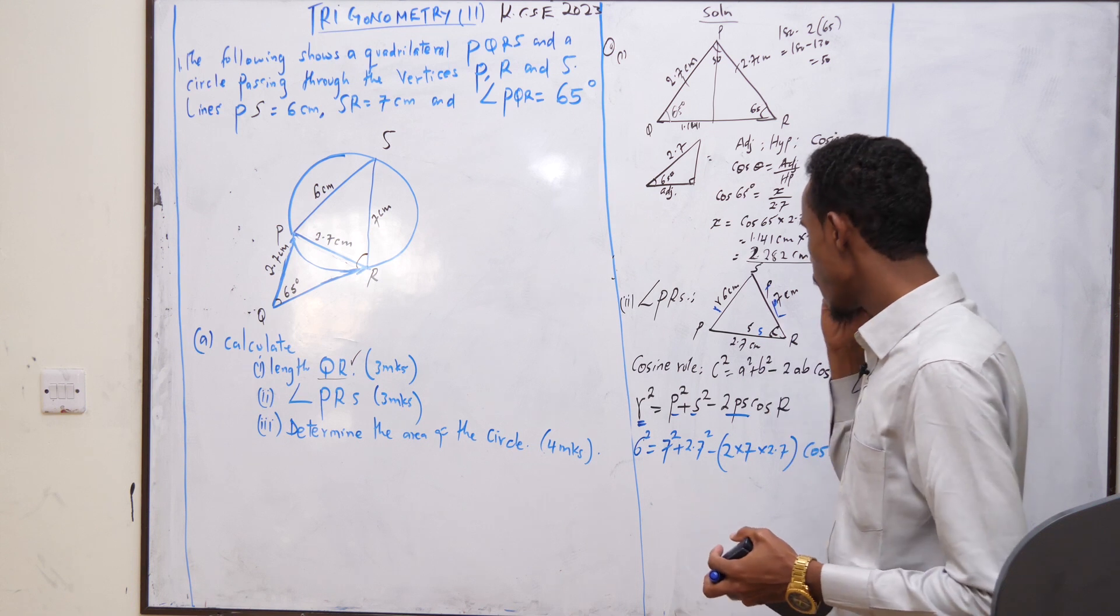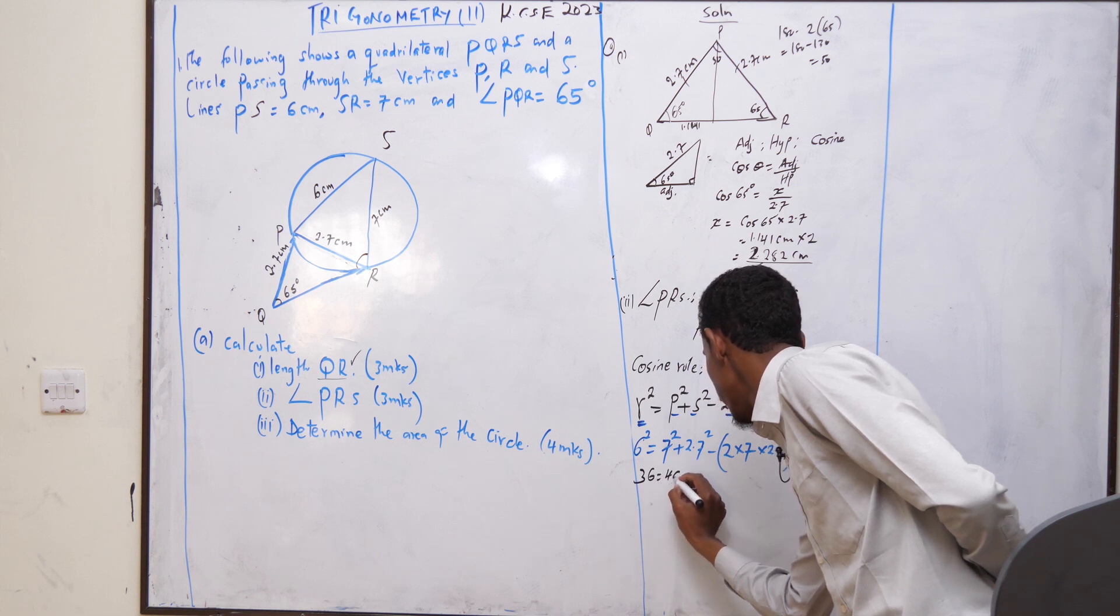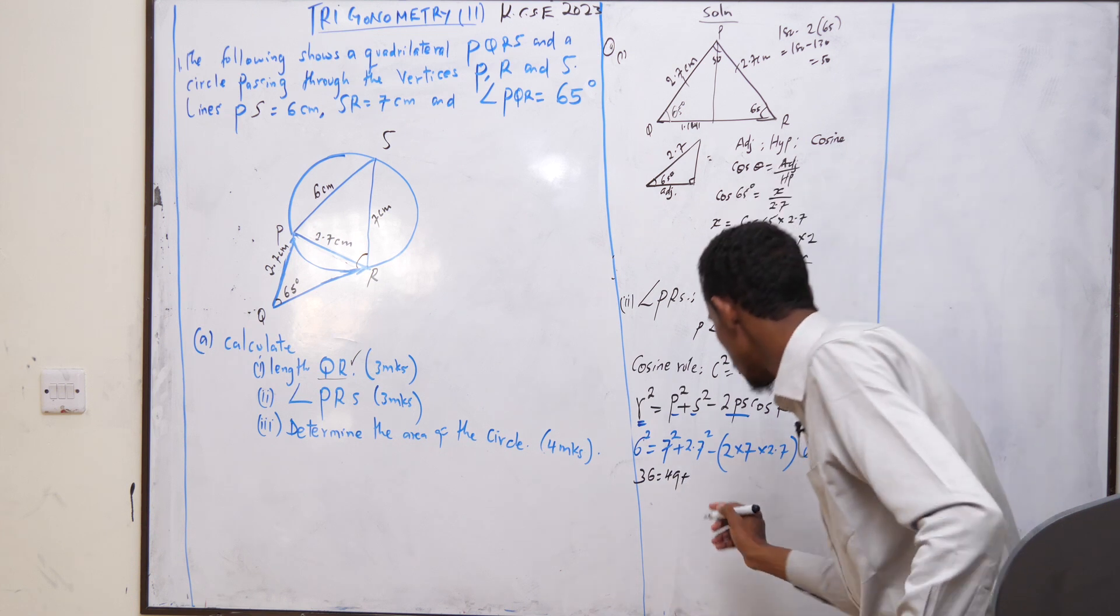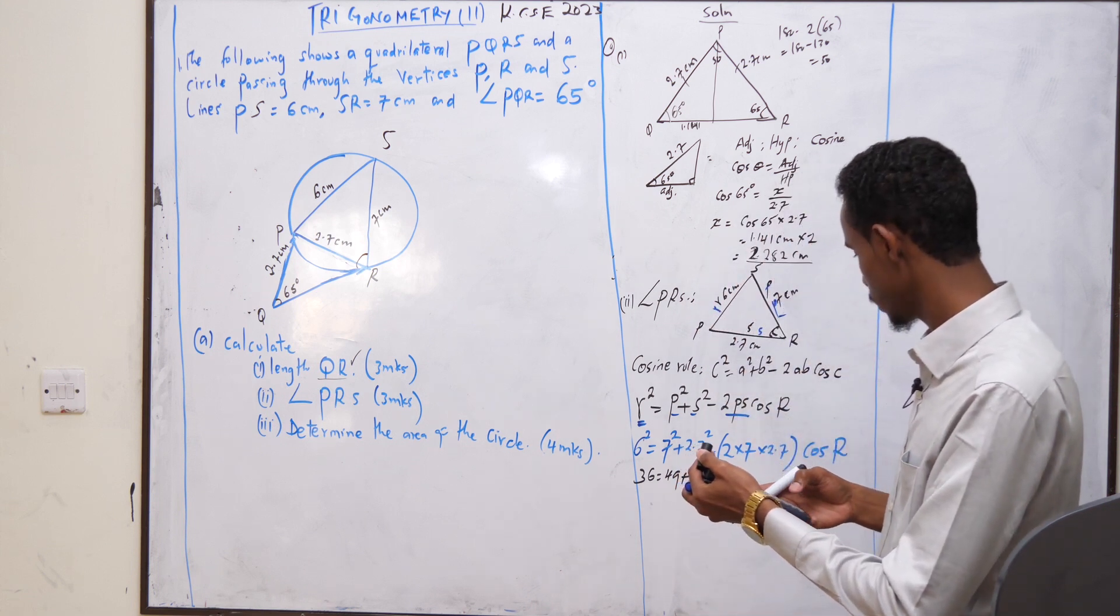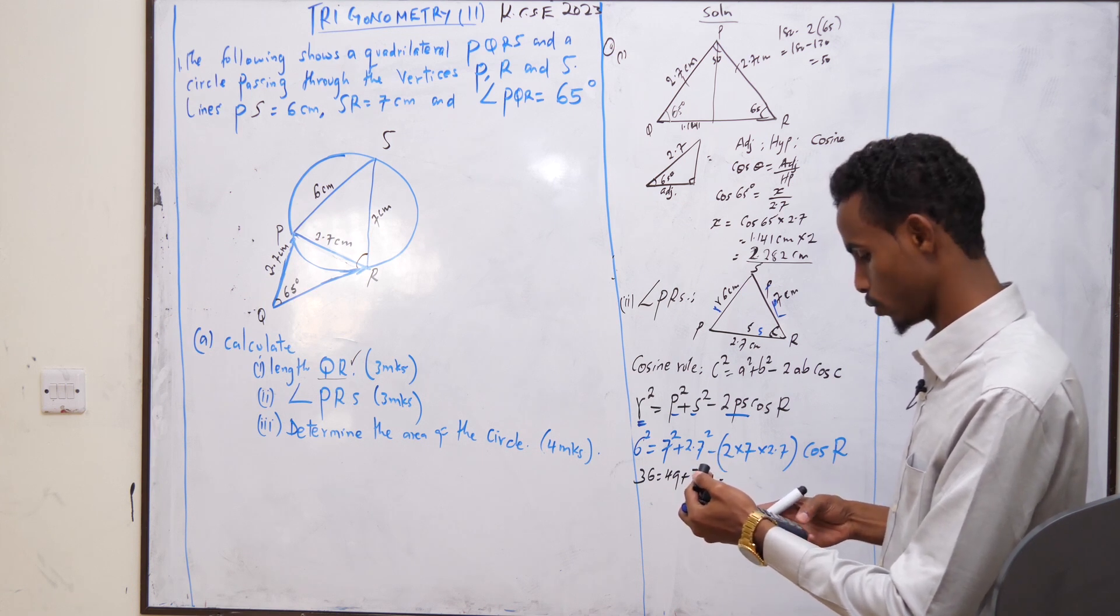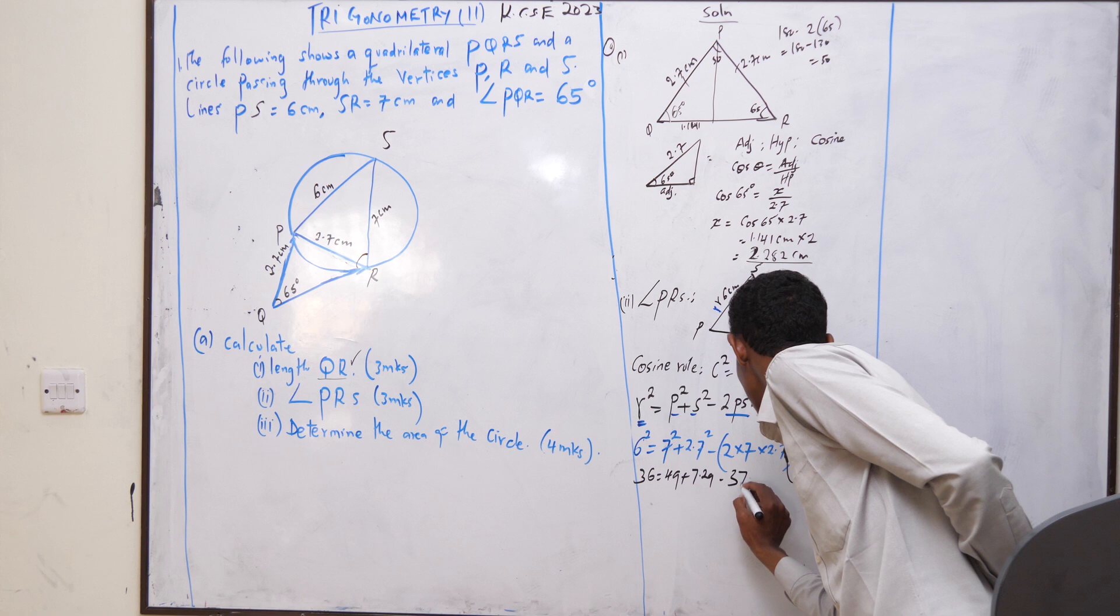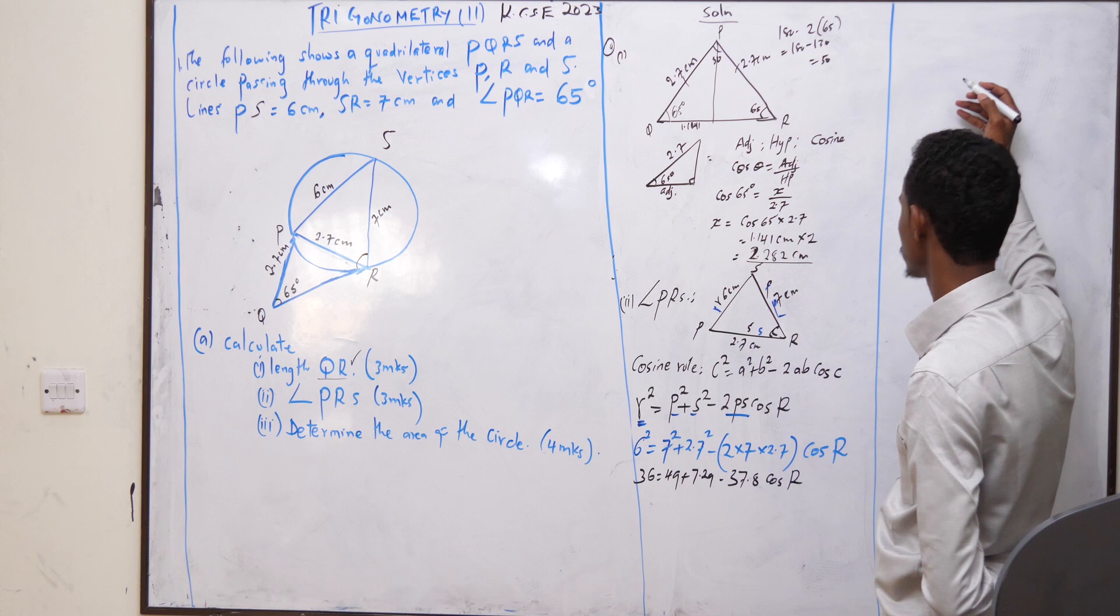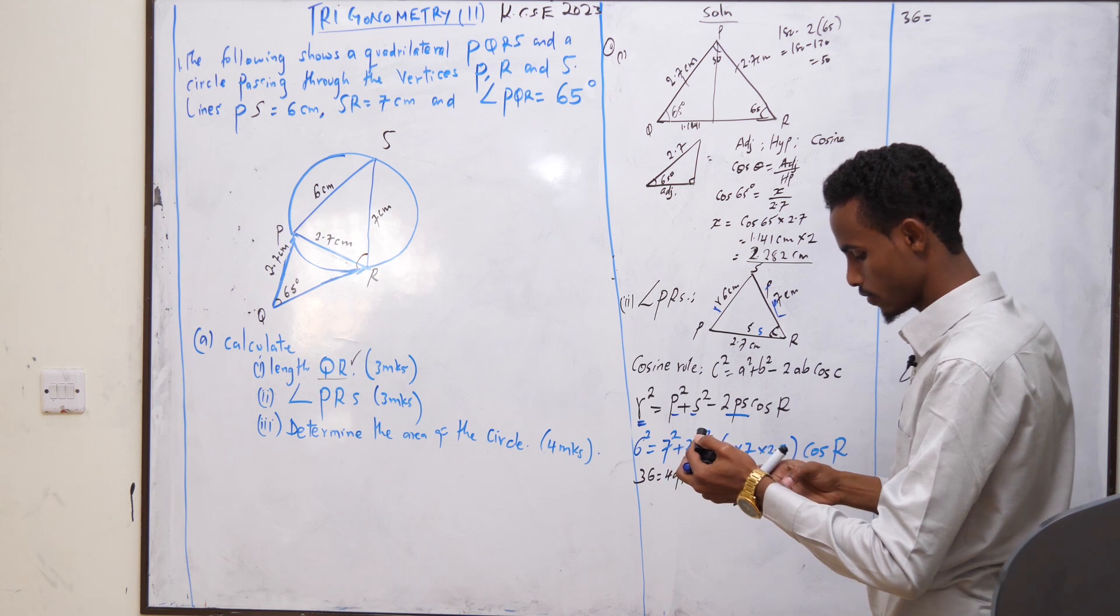I have just substituted the formula in the question. How would it be after substitution? This one is going to become 36 equals 49 plus 2.7 squared, 7.29, minus 2 times 7, 2 times 7 times 2.7, that's 37.8 cos R.